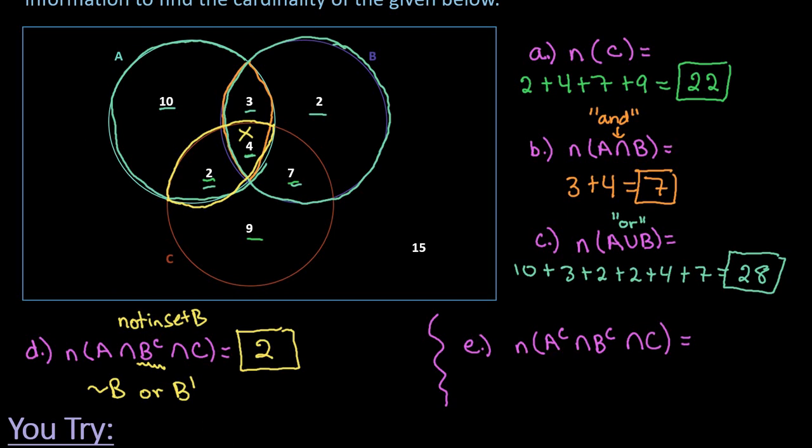And then the last one that I'm looking for is for this one it's saying the number that is not in A, not in B, but it is in C. So this is the only C region so 9 would be the total answer.